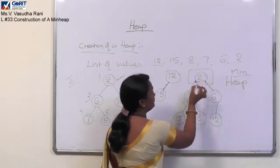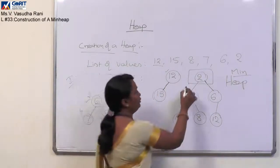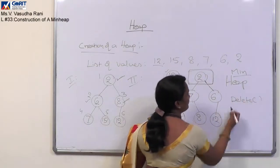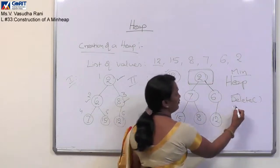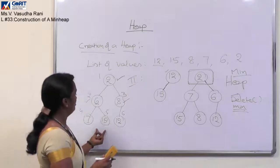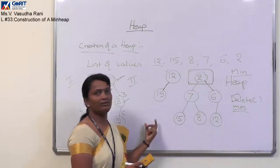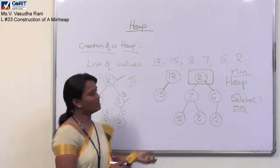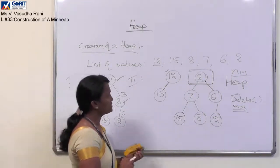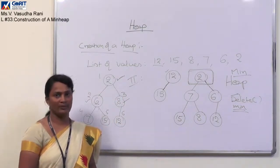The root node value is the minimum value among all the list of values. Upon this heap, performing one delete operation will return the minimum value. Both methods produce the same heap. This is all about construction of the heap data structure by following two different ways. Thank you.